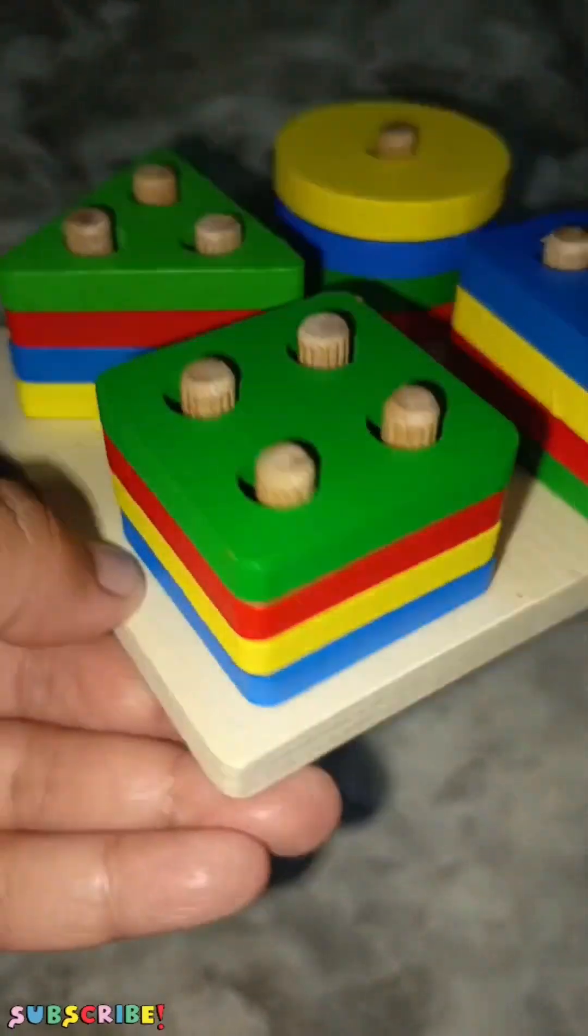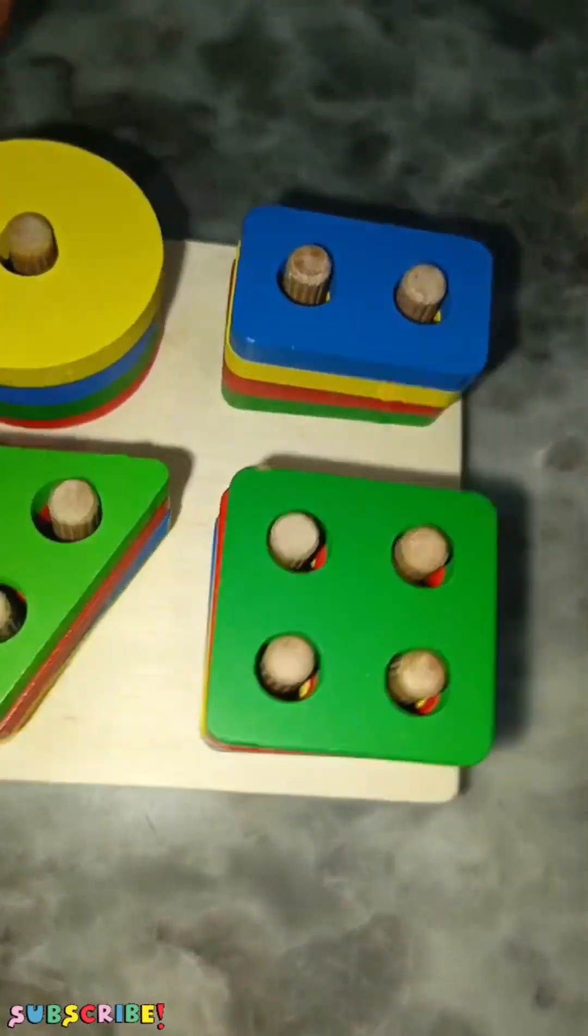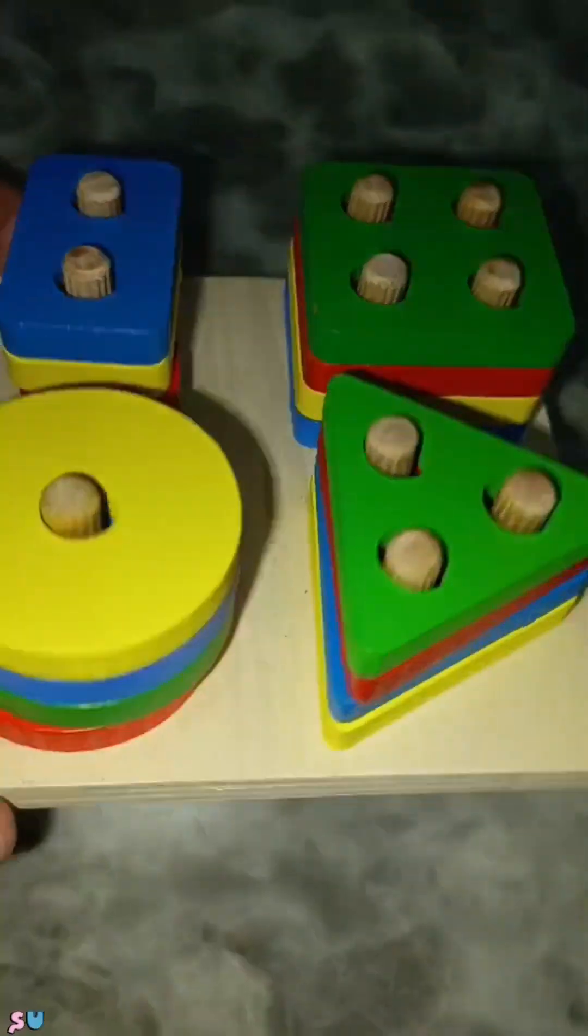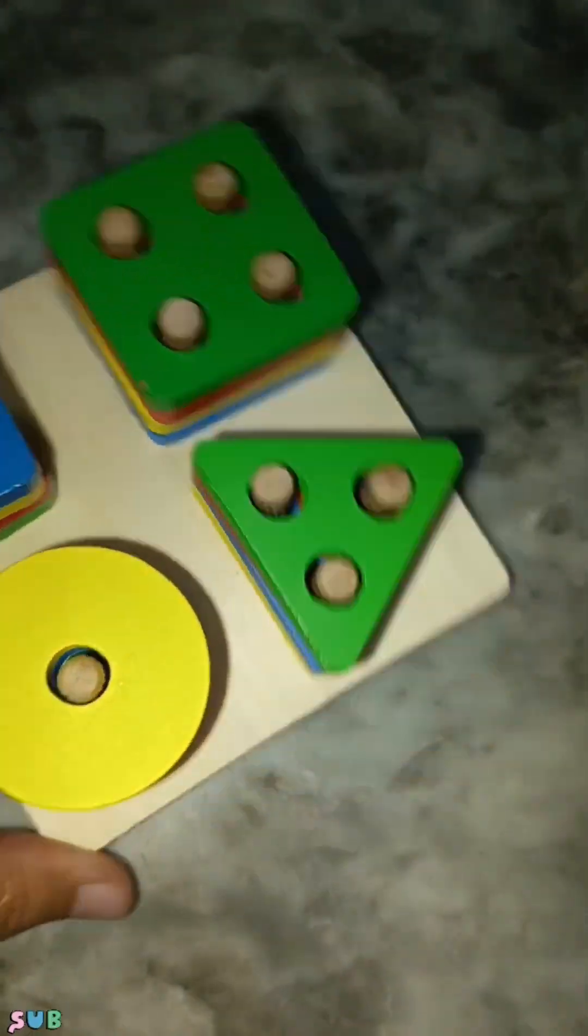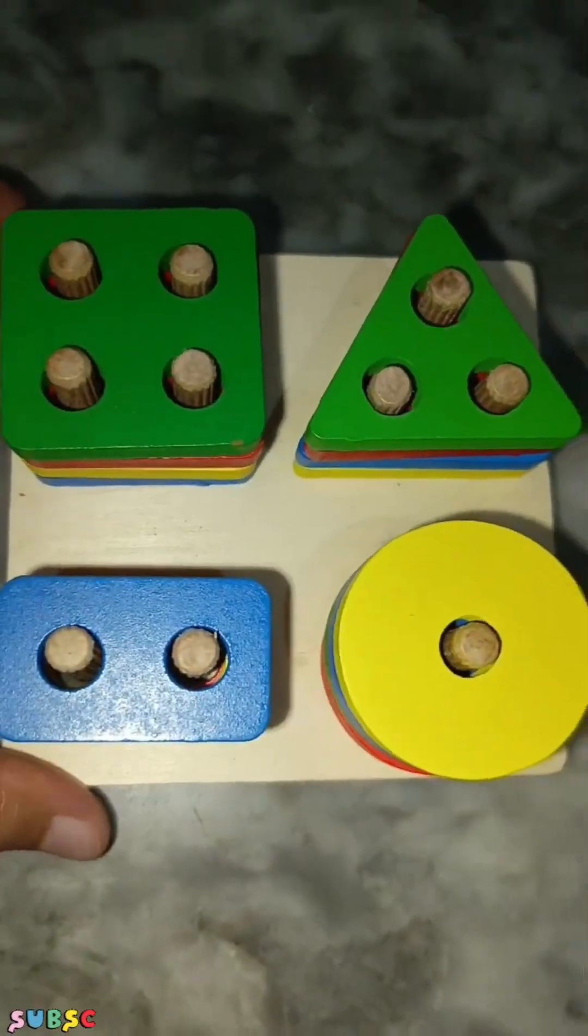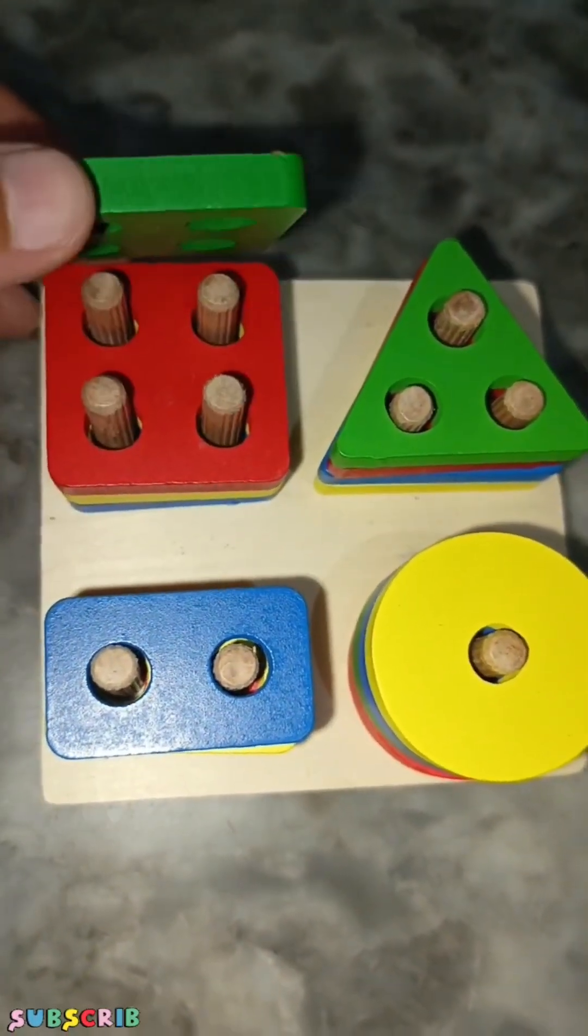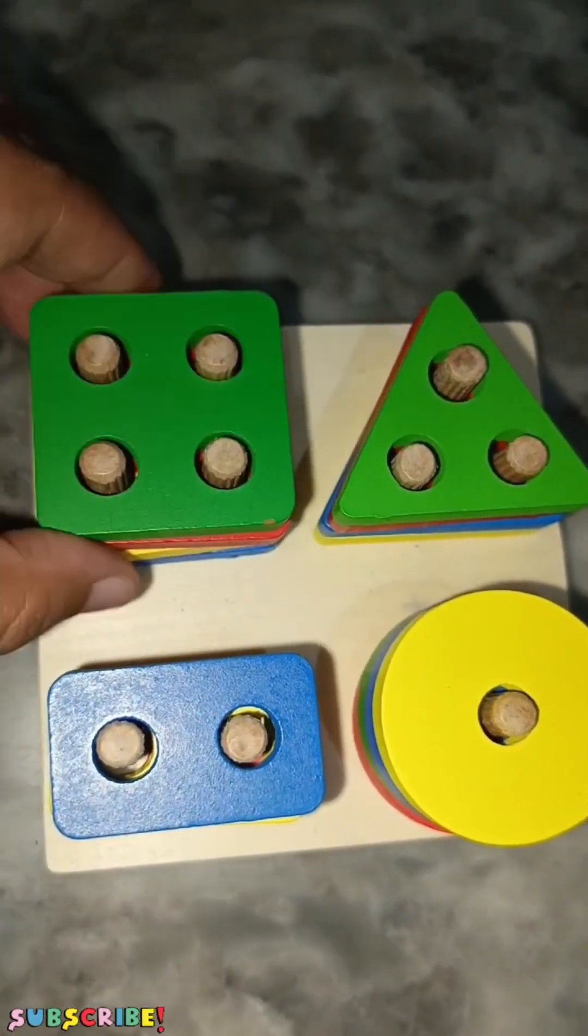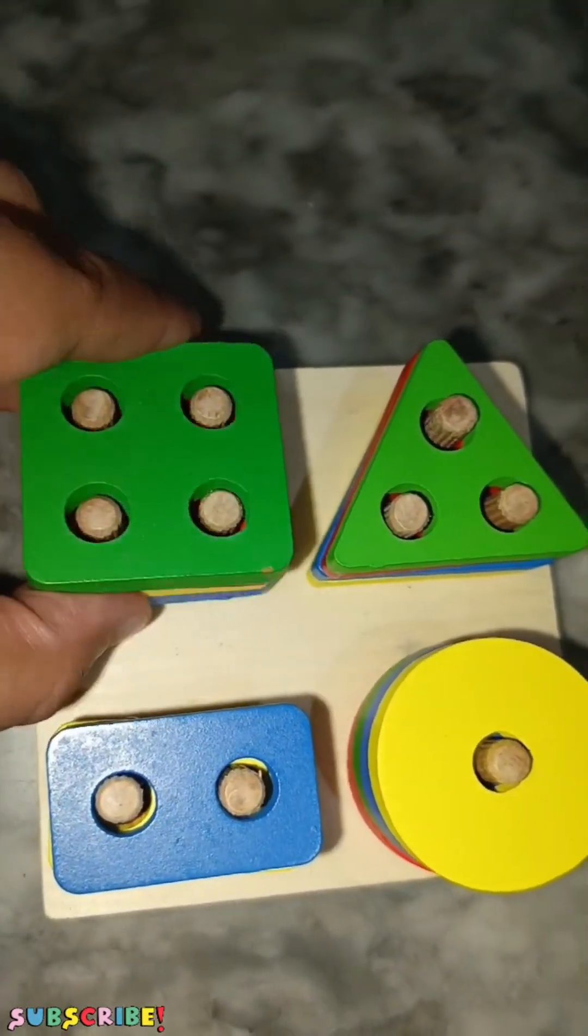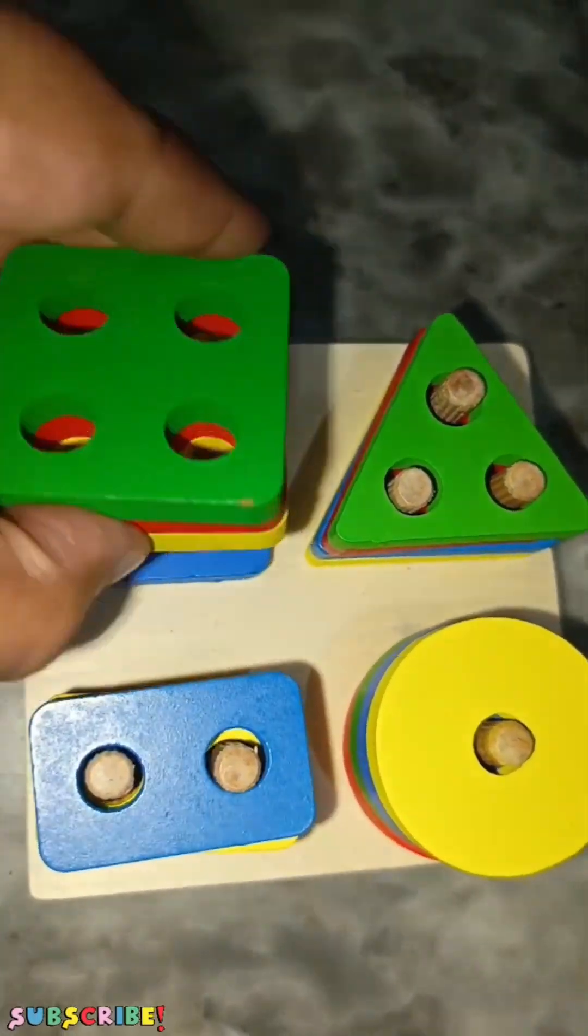And colors we have green, red, yellow, blue. So these are green, red, yellow and blue color. What shapes? Square, triangle, rectangle and circle. Square.